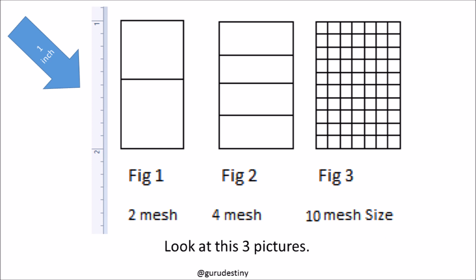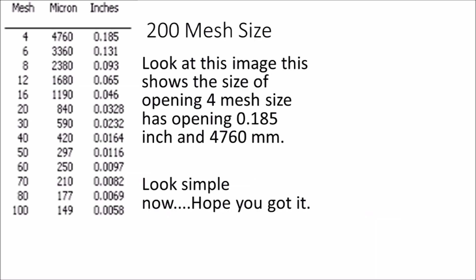Now, 200 mesh size means 200 openings per square inch. Look at this image — it shows the size of opening for mesh size 4, which has an opening of 0.185 inch and 4760 micrometers. Hope you got it. Thank you for watching.